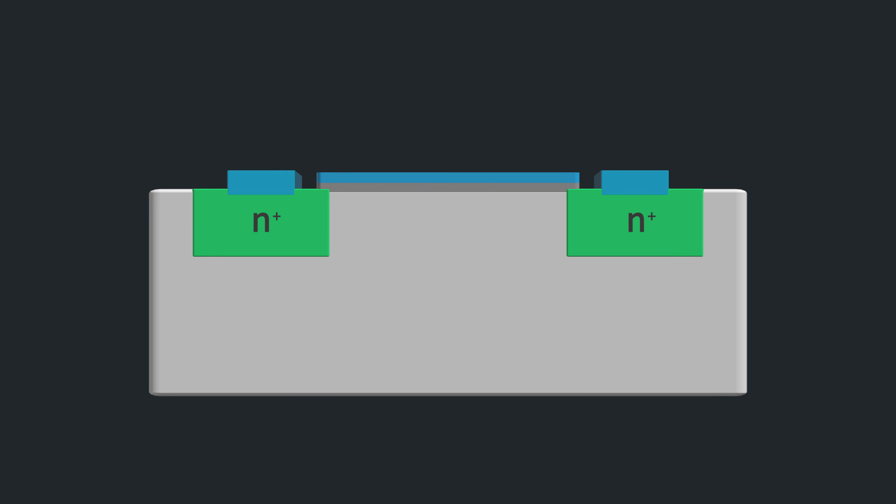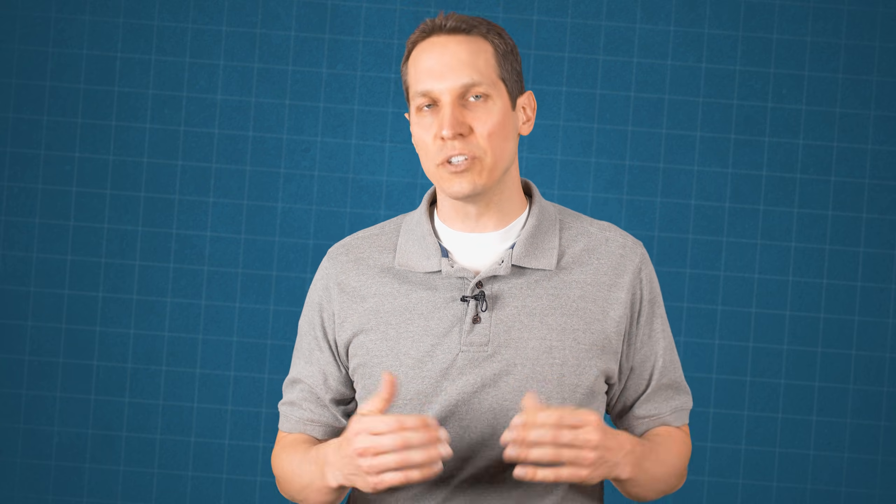But it may seem strange to have your gate being completely electrically isolated from the rest of the circuit. This is where the FET term comes in. Even though there isn't a direct electrical connection, the voltage on the gate creates a field effect.